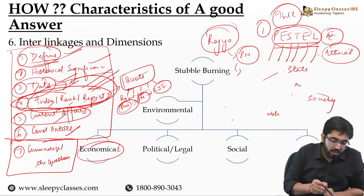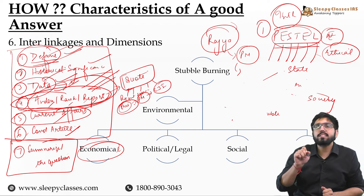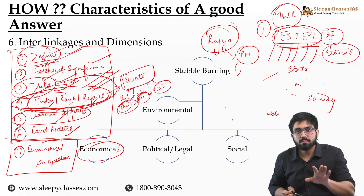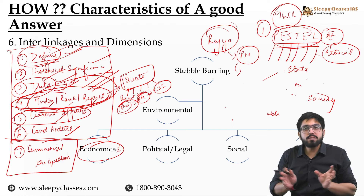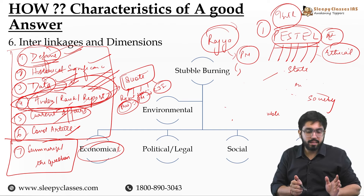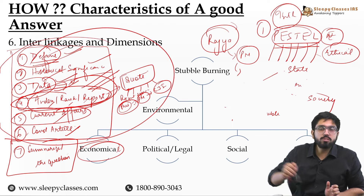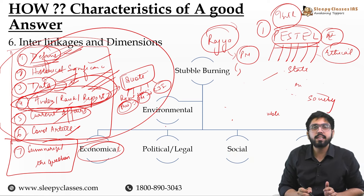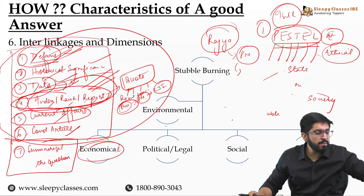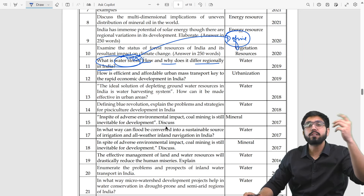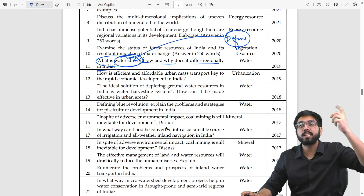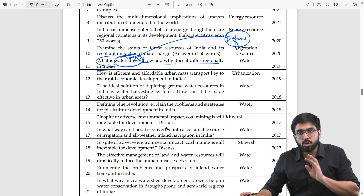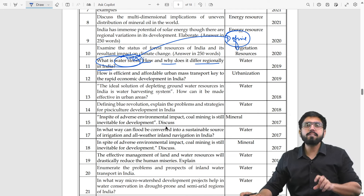Thik hai? So there are 4 ways you can start this water stress question. Give yourself these 7 options, and out of those 7, whichever fits better, use that to begin. At the end, think about whether you need to define — define only when the question explicitly asks 'what is water stress,' 'what is air mass,' 'what is marine heat wave.' In those cases, define it directly. Do you understand the point? Give yourself these 7 options.